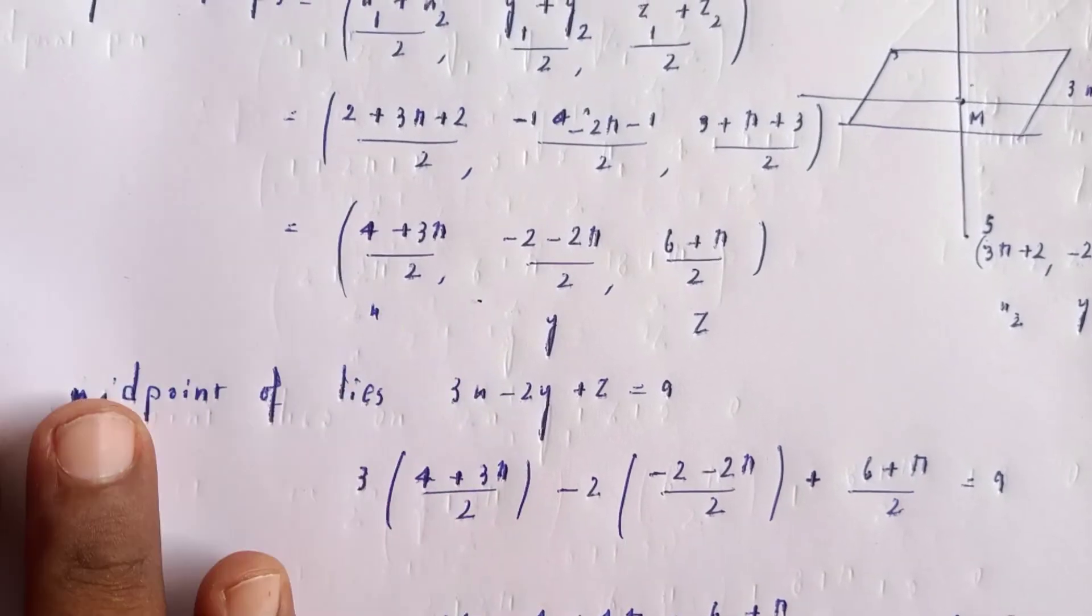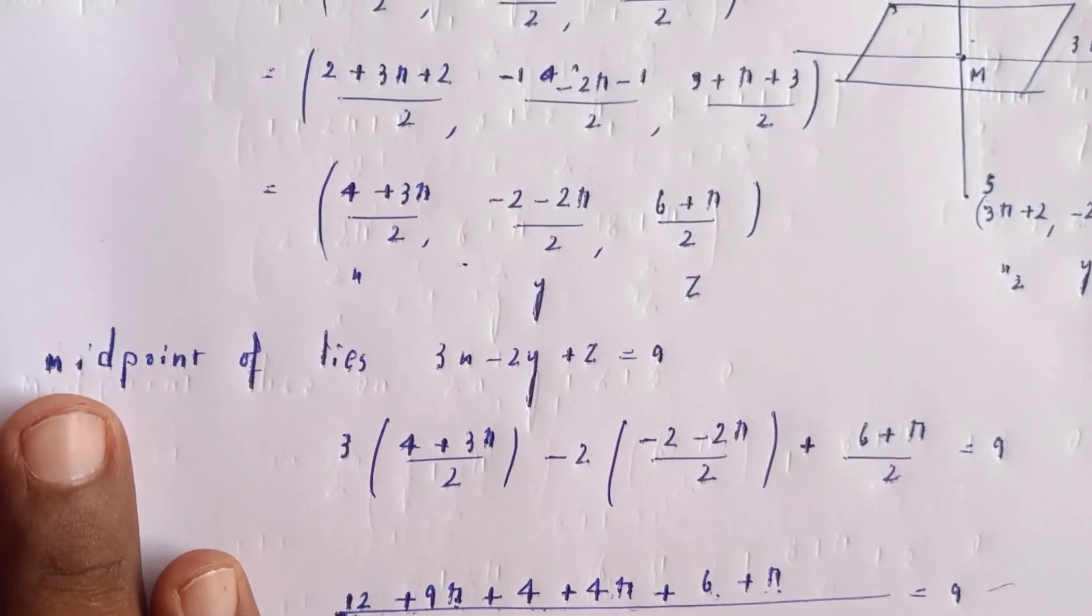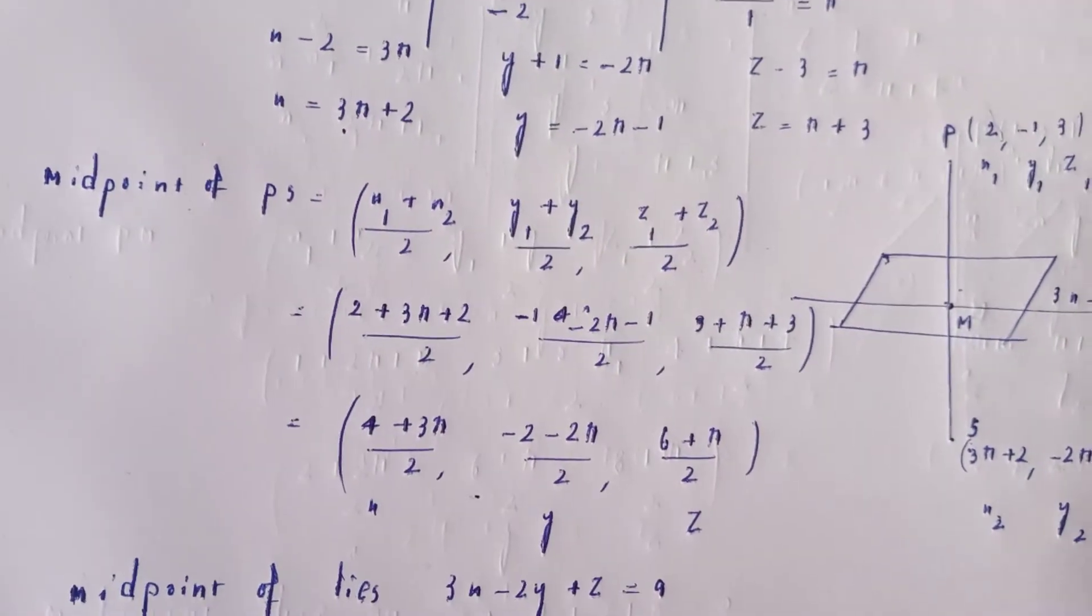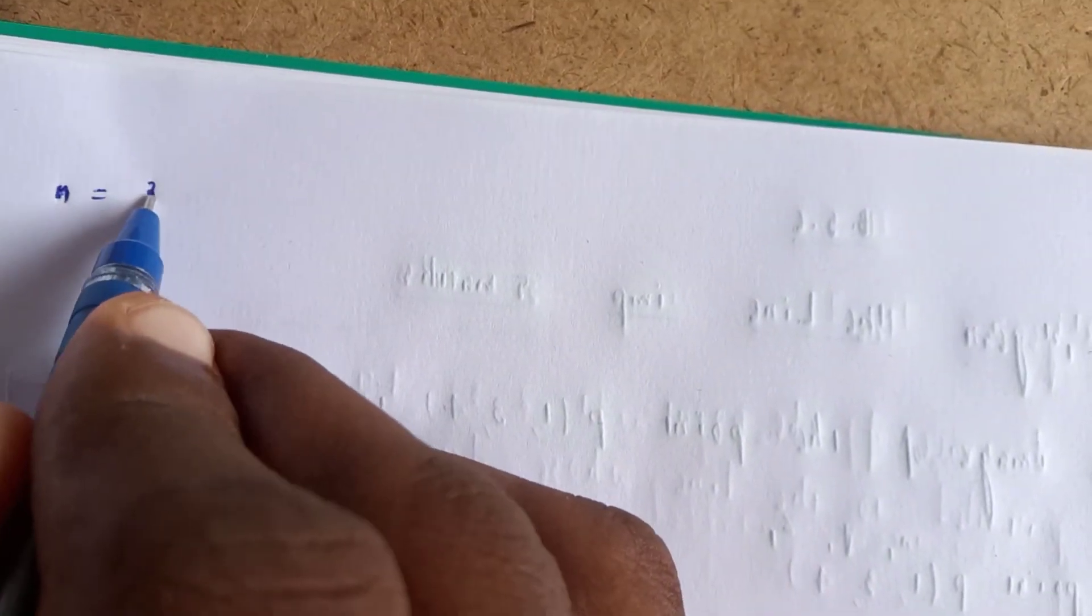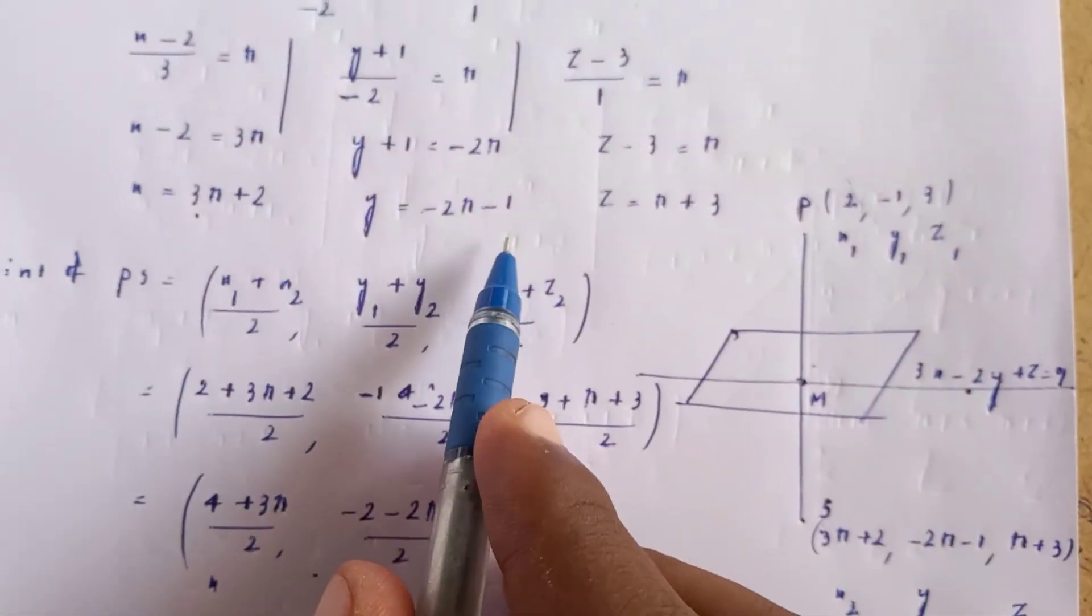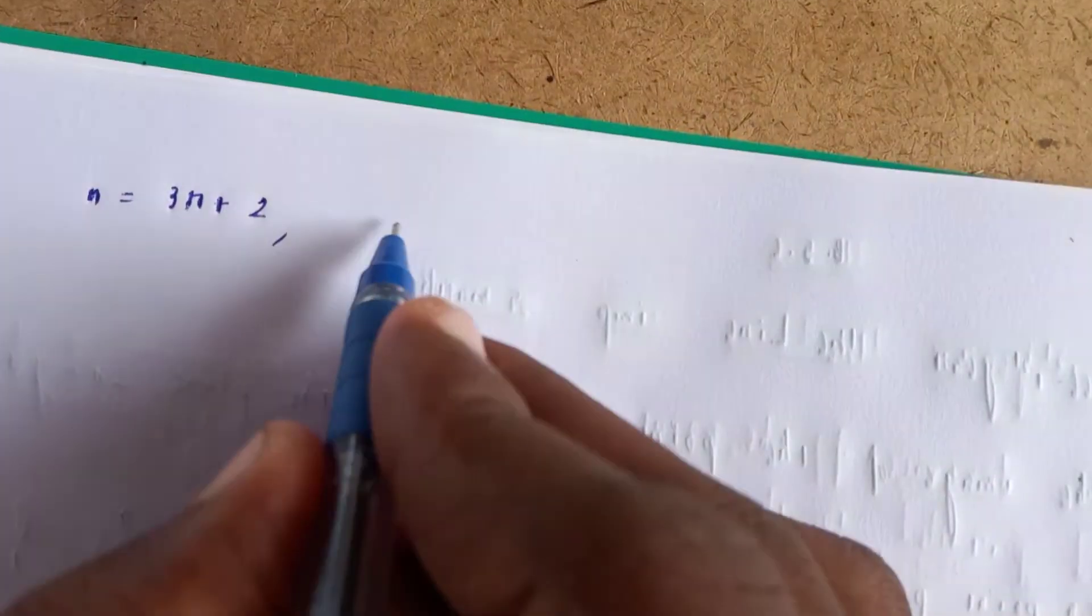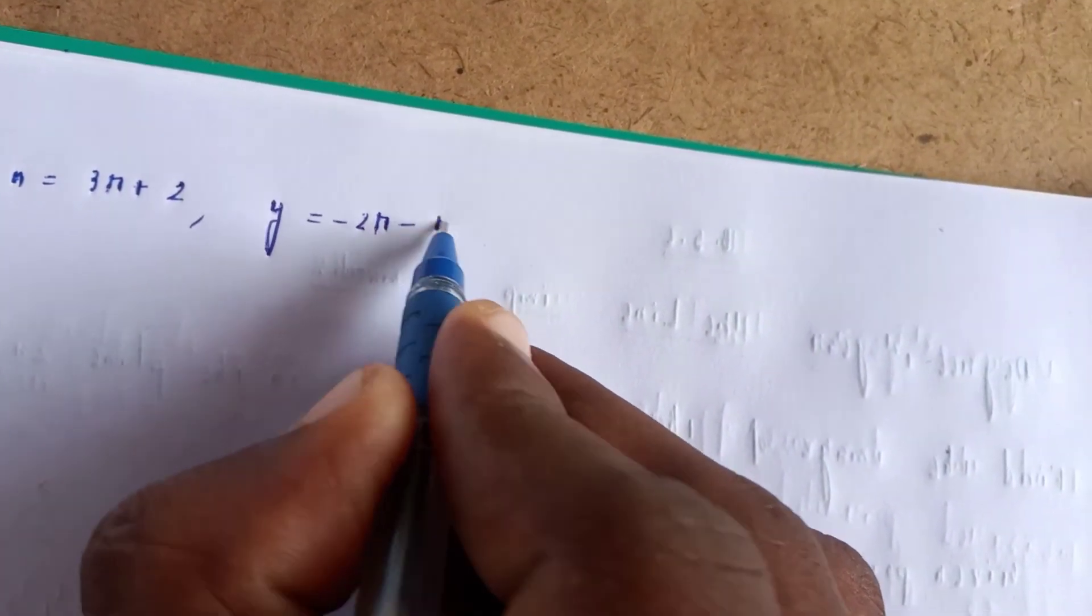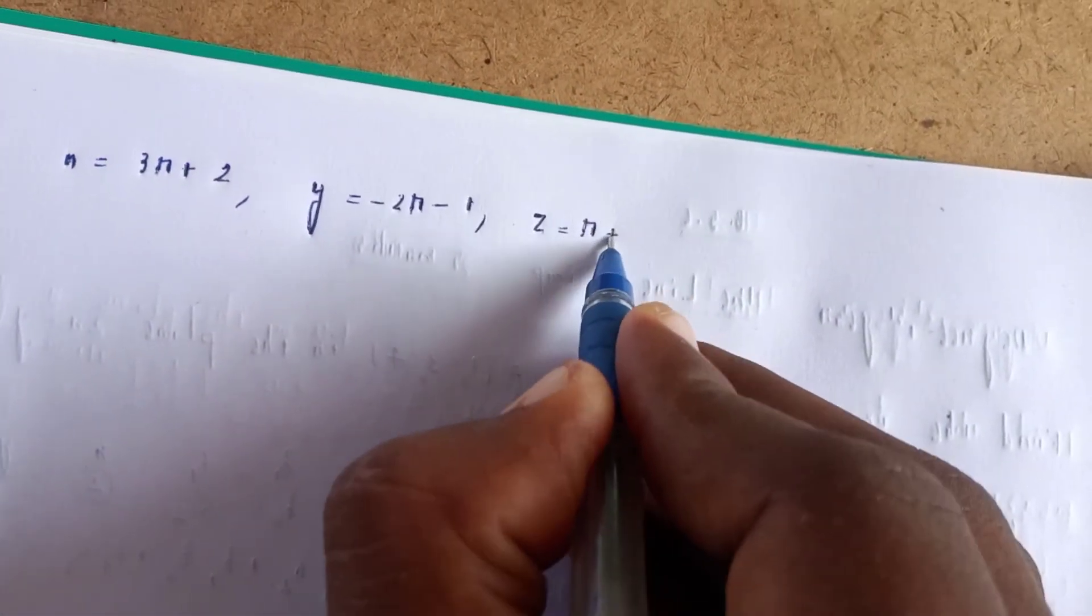Now we substitute r = -2/7 to find the image coordinates. For x: x = 3r + 2 = 3(-2/7) + 2. For y: y = -2r - 1. For z: z = r + 3.